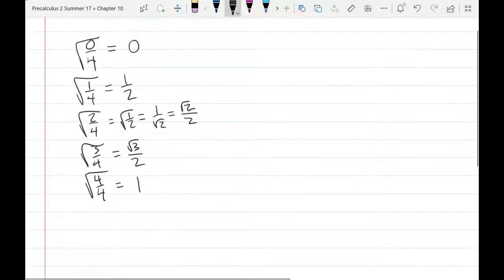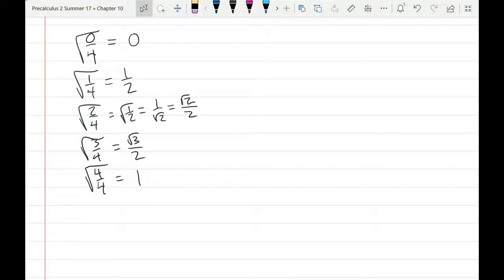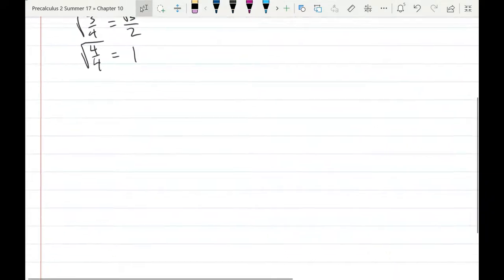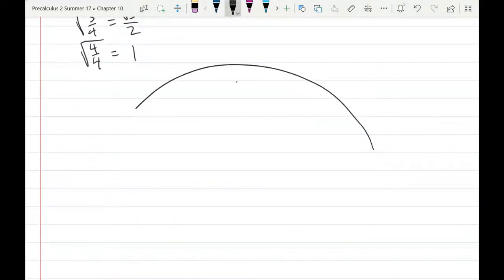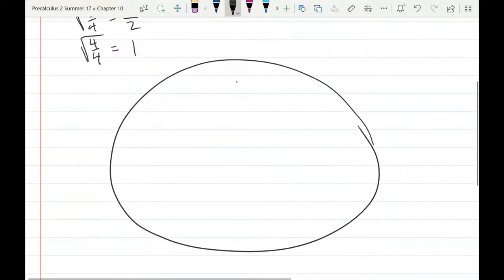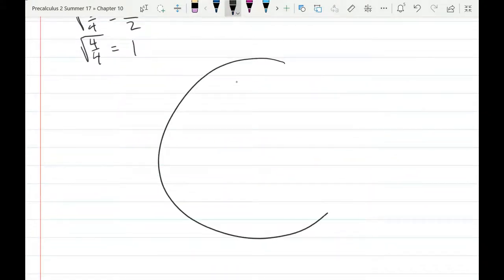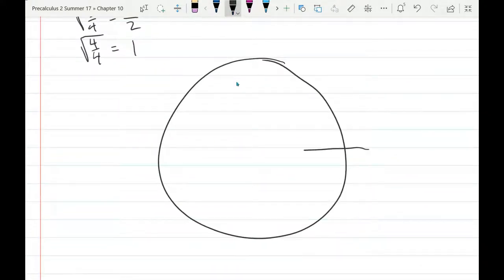These are the five values that you'll see on the unit circle. So now we're going to draw a big circle. That's a nice oval. Perfect.